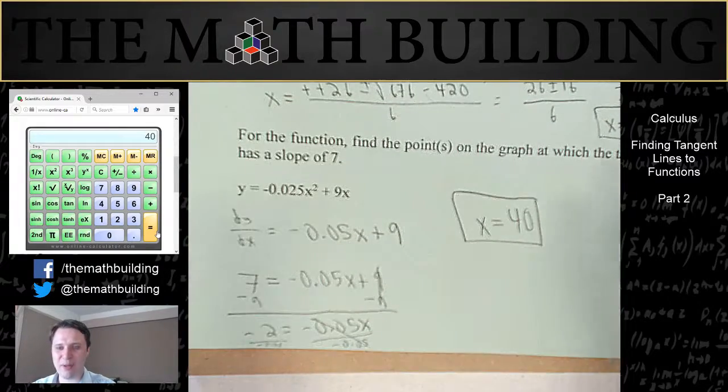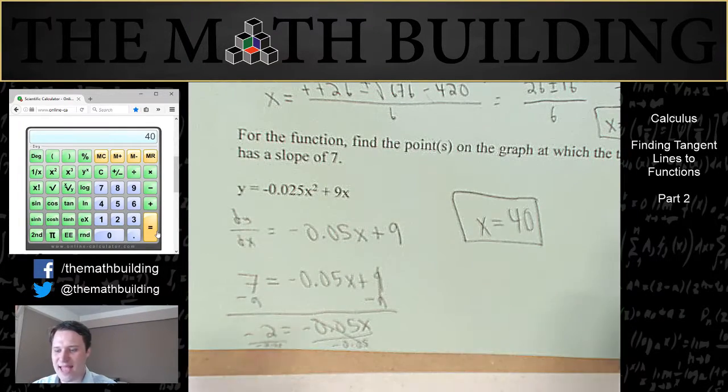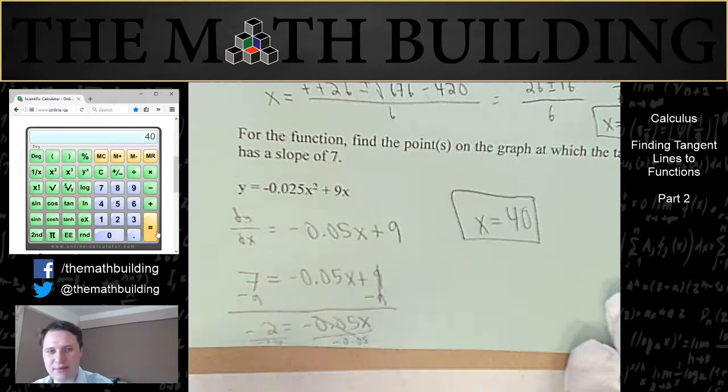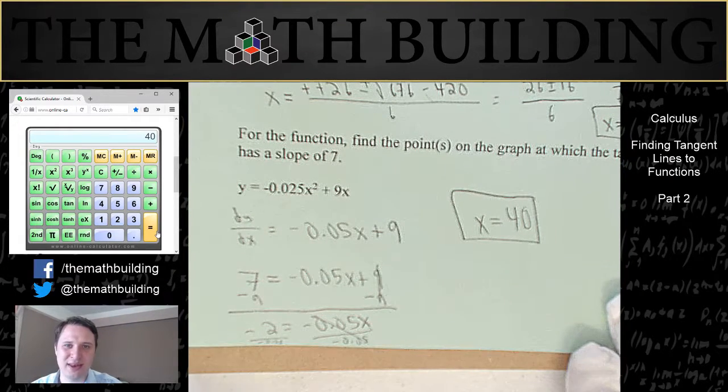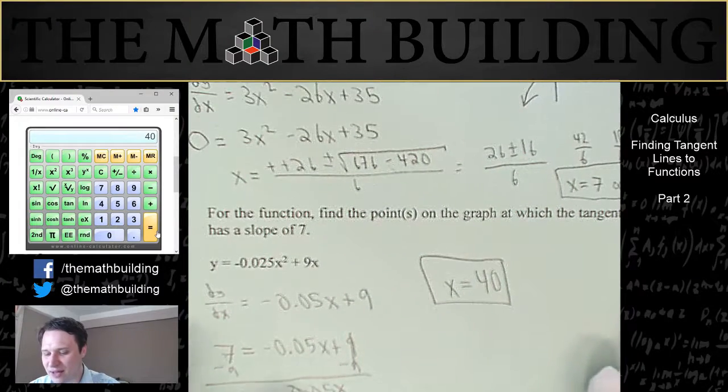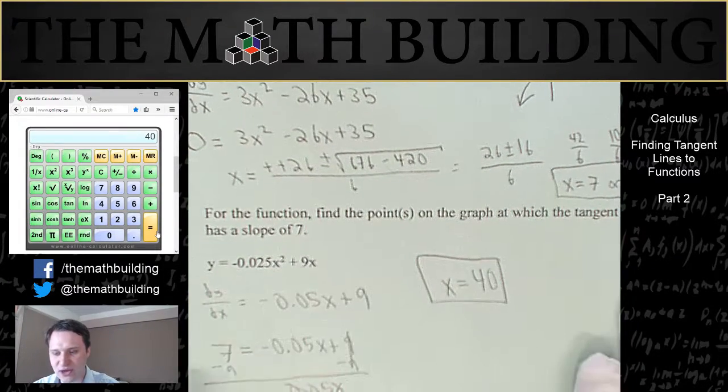So there you go. We have this upside down parabola. And at the value x equals 40, the instantaneous rate of change at that point is going to equal 7. So that's how you find horizontal tangent lines.